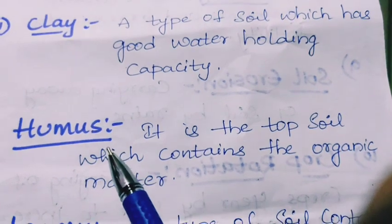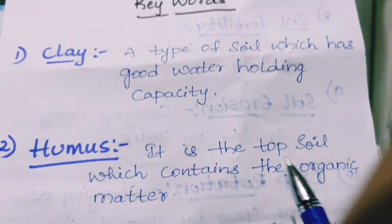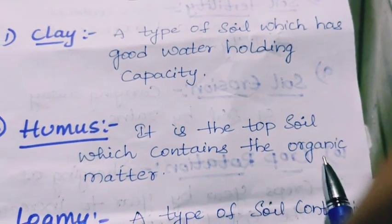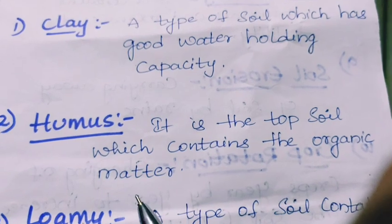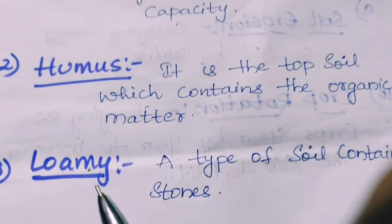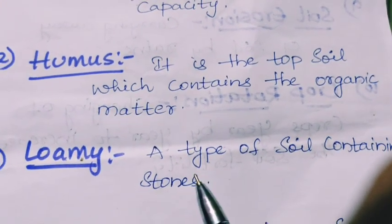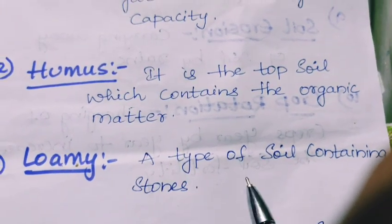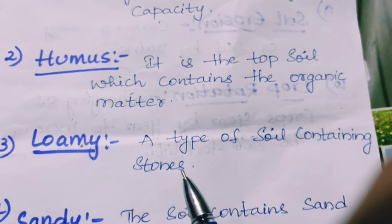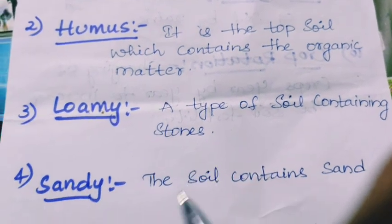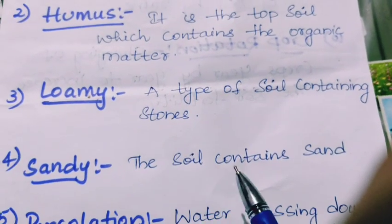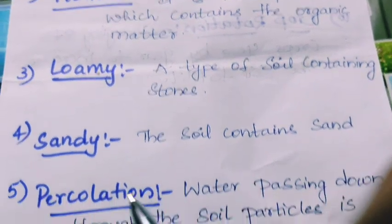Humus: it is the top soil which contains organic matter. Loamy: a type of soil containing stones. Sandy: the soil contains sand.